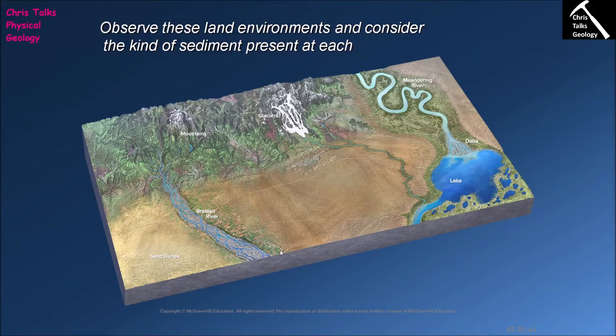The reason we can do this is because each environment in which sediment is being deposited is different. Each environment is going to have its own different conditions, and this is going to affect the type of sediment which is being deposited in that environment. And of course that sediment is then going to get turned into sedimentary rocks.